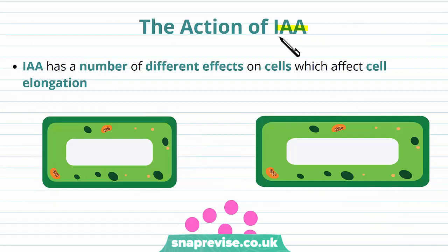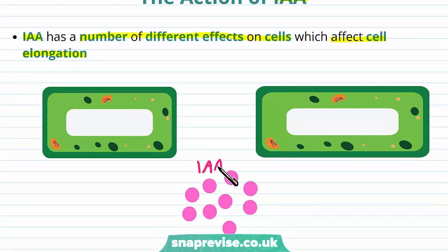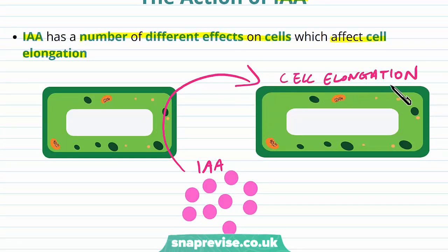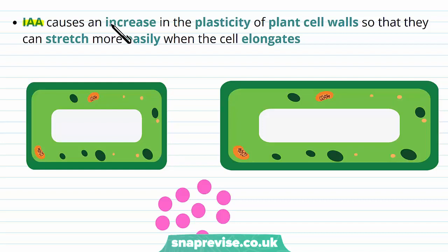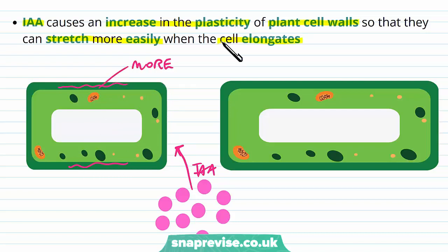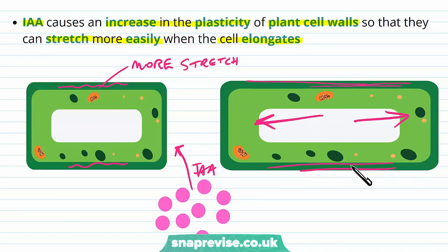So how does indole acetic acid actually work? The IAA molecule has a number of different effects on cells, mostly affecting cell elongation. When the chemical is released, it relates to a process called cell elongation — the cell simply becomes longer in its length. The molecule can cause an increase in the plasticity of the plant cell walls so that they can stretch more easily when the cell elongates. The IAA binds to the cell, causing the cell walls to become more stretchy. Plasticity basically refers to flexibility, meaning the cell walls can stretch with the elongating cell without stress or damage.